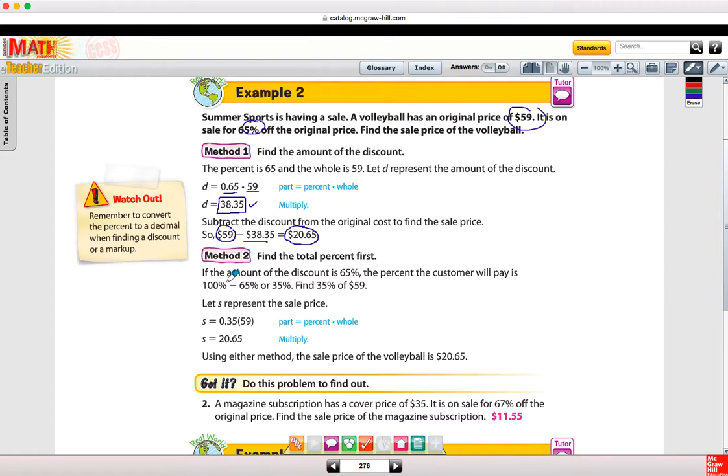Now here's where it's just a little bit tricky, but it makes sense. Method two, if you pay for 100% of the volleyball, then you would pay for $59, right? But if it's 65% off, that means you don't pay 65%. You do pay the remaining 35%. So if I take 35% times 59, I get that same price in one step that I got up here in method one, only I didn't have to do two steps.